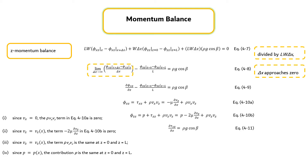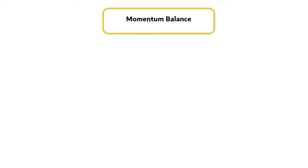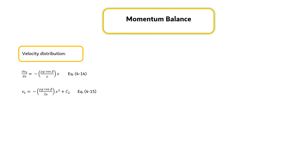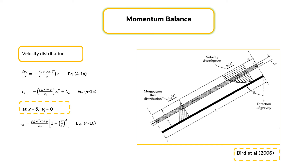Equation 4.11 is the differential equation for the momentum flux tau_xz. It may be integrated to yield equation 4.12. The constant of integration may be evaluated by using the boundary condition at the gas-liquid interface, which results in equation 4.13. Substituting Newton's law of viscosity into the left side of equation 4.13 results in equation 4.14, which is the differential equation for the velocity distribution. It can be integrated to give equation 4.15. The constant of integration is evaluated using the no-slip boundary condition at the solid surface, and finally the velocity distribution is determined from equation 4.16, with the results shown in the figure.